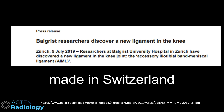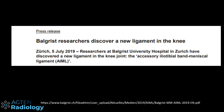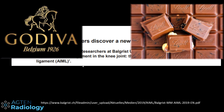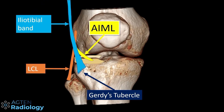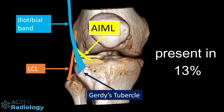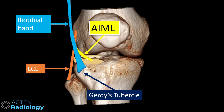In 2019, a surgeon from the Balgrist University Hospital discovered another ligament on the lateral side of the knee, naming it the accessory iliotibial band meniscal ligament — the AIML. This is what I meant by Swiss chocolate at the beginning: Belgium and Switzerland both discovering knee ligaments. The AIML is a prominent structure running from the iliotibial band down to the anterior horn of the lateral meniscus, inserting a little more anteriorly, with the LCL and Gerdy's tubercle visible nearby.